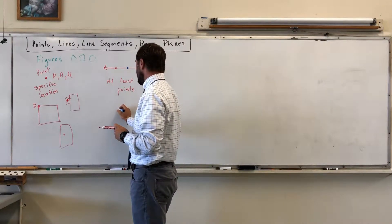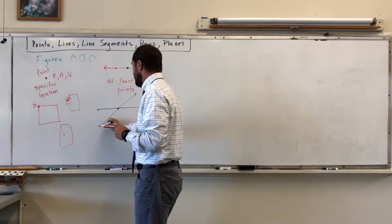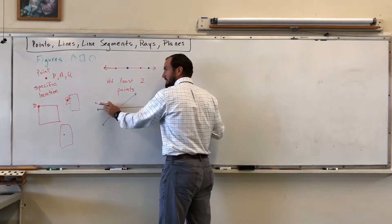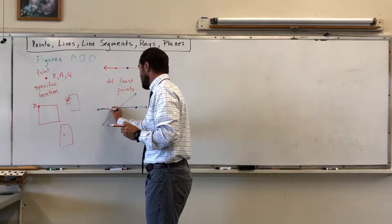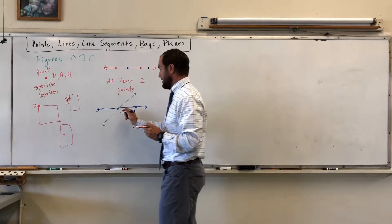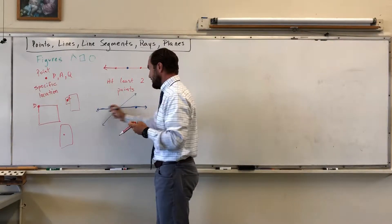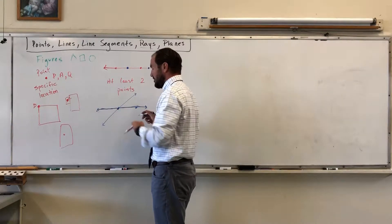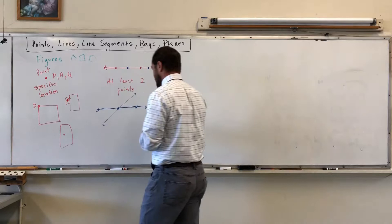Here's why you need two points: with one point, I can make many different lines through it — I'm not determining a specific direction. The second point tells us which direction we're going. It's like mapping: if I want to send you in a certain direction, I have to give you two points to indicate which street or direction you're going.